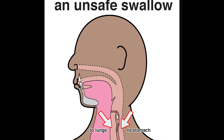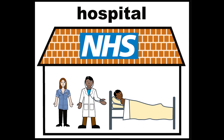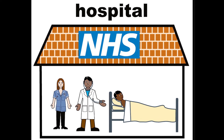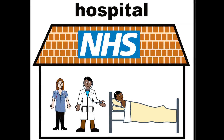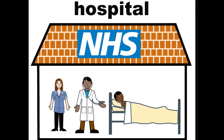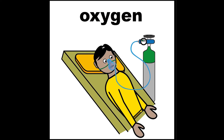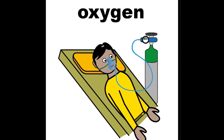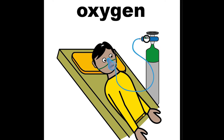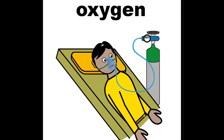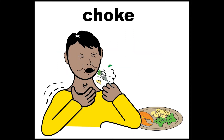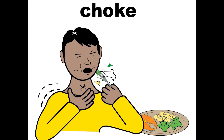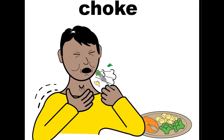If chest infections are serious they can lead to aspiration pneumonia and will usually mean the person is very poorly and will need to go to hospital. They might need to have oxygen to help them breathe and to be given antibiotics from an injection or a drip. People can die from aspiration pneumonia. People can also die from other symptoms caused by an unsafe swallow, such as choking, losing weight and urine infections.